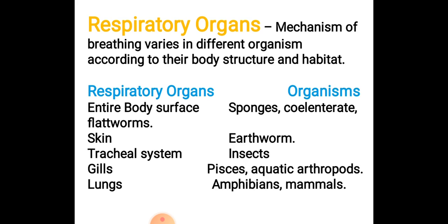For example, in sponges, cnidaria, and flatworms, there are no major respiratory organs — the entire body surface acts as a respiratory organ. In earthworms, the moist skin is used for gas exchange. In insects, there is a tracheal system — a network of trachea and spiracles for gas exchange.